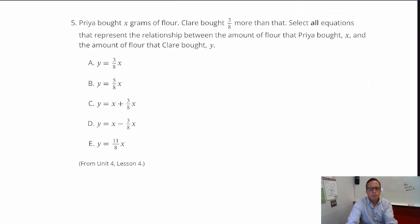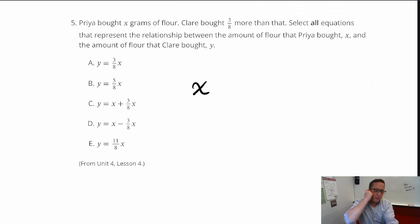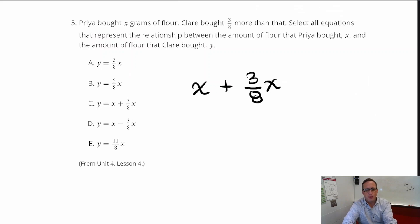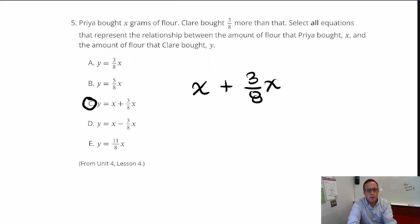Number 5: Pria bought x grams of flour. Claire bought 3/8 more than that. Select all equations representing the relationship between x (Pria's flour) and y (Claire's flour). Right away, option C is one of the answers. And I would also pick E.